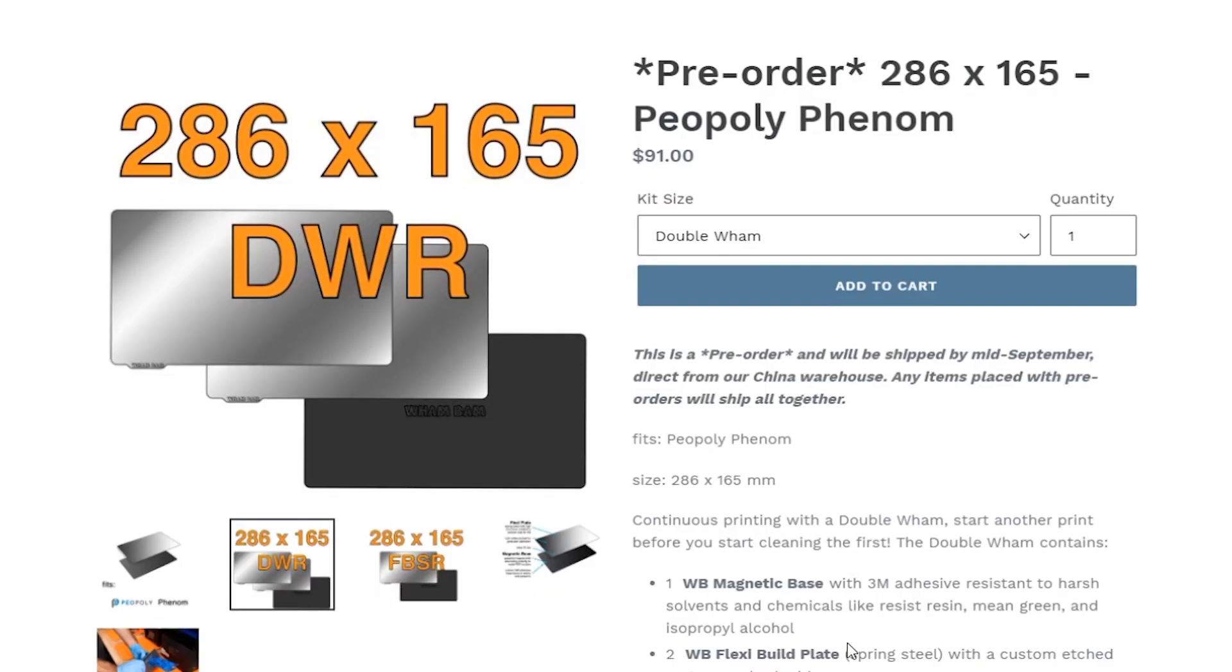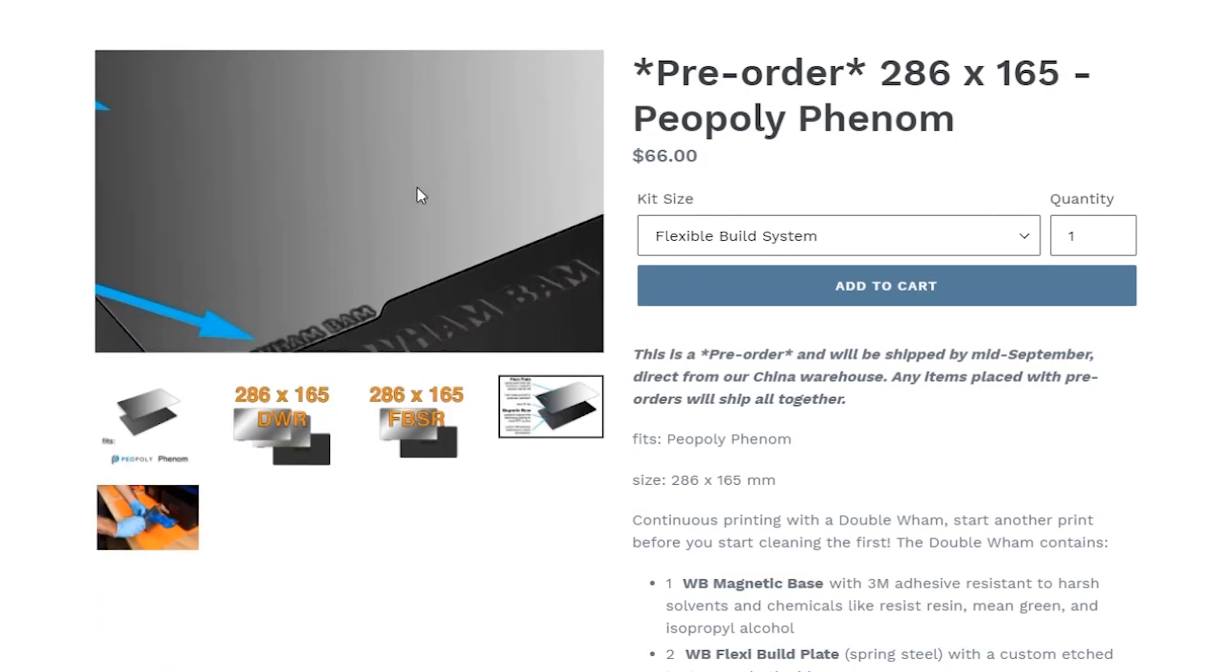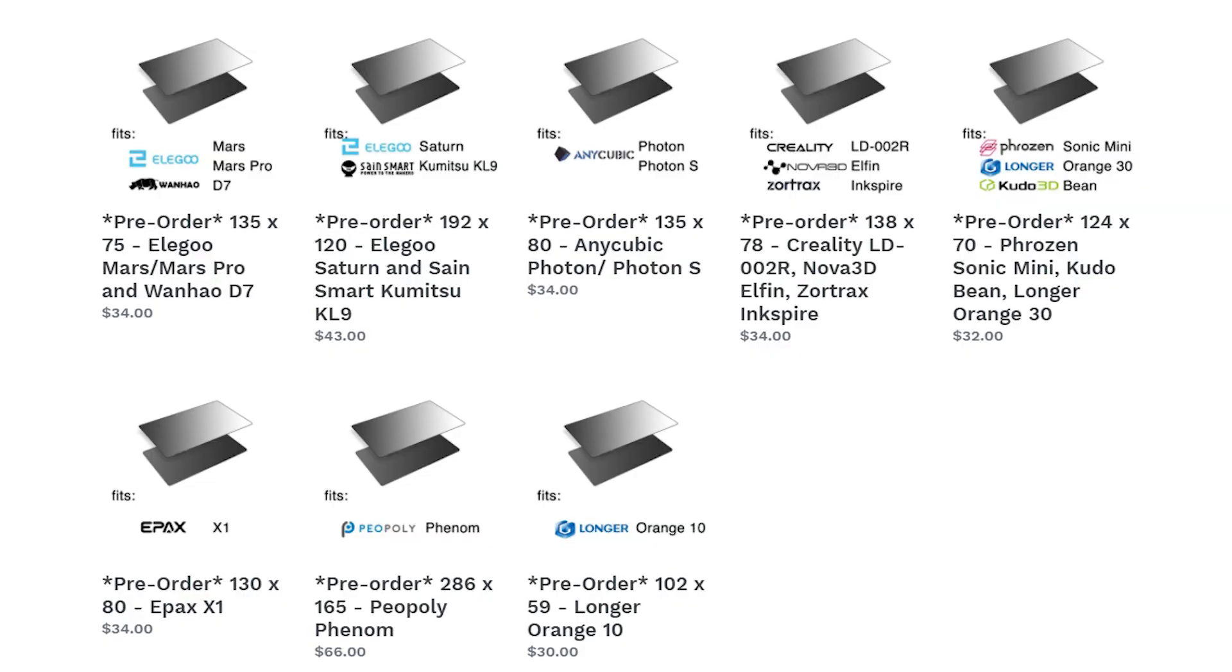All of these right now are pre-order. Pricing wise they're coming in at what I would say is a very fair price. You've got the Peopoly Phenom which you can get a double Wham which is going to mean you're going to get two spring steel sheets and the magnetic base for $91. You can bump it down to the single spring steel sheet for $66 for the Peopoly Phenom. Now if you're looking at the smaller printers like the Mars or the Creality, you're going to be looking quite a bit less since they're such a smaller piece. So you're going to be starting as low as $32 to $34 for printers in that size range.